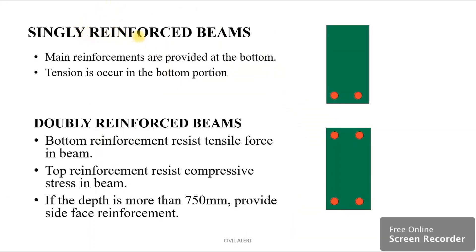In singly reinforced beams, main reinforcements are provided at the bottom, where tension occurs. In doubly reinforced beams, the bottom reinforcement resists the tensile force in the beam and the top reinforcement resists the compressive stress. If the depth is more than 750 mm, we provide side face reinforcement.